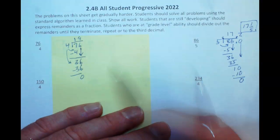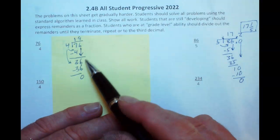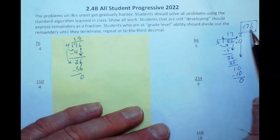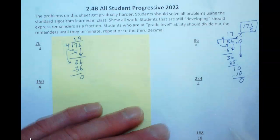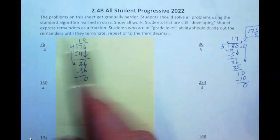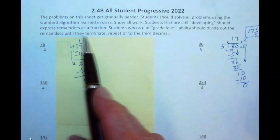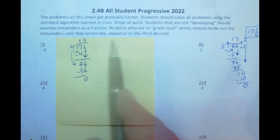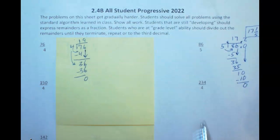So, students who are challenged by division, you can just leave it as a fraction. Those of you who are good at this, I expect you to divide them all the way through. What are the rules? Well the problems are going to get harder as you go. And it says here at the bottom you should divide them out, divide the remainders out until they terminate, until they finish like this one did, until they repeat, or to the third decimal.